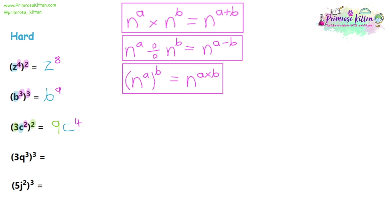Looking at question 4, we have a normal-size 3 inside the bracket, and outside the bracket we also have a 3. So we do 3 to the power of 3: 3 times 3 is 9, times 3 again is 27. Then the base is Q, so write Q. The powers are 3 and 3, and since they're around a bracket we multiply them: 3 times 3 is 9. Notice that we used that outside power of 3 twice — once for the number calculation and once for the index calculation. The answer is 27Q to the power of 9.